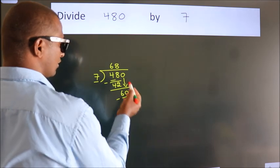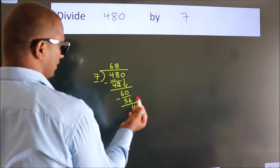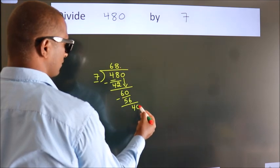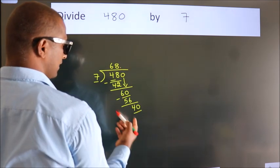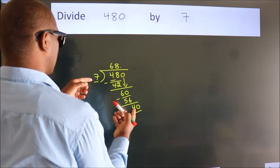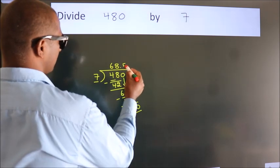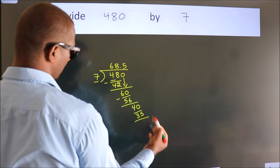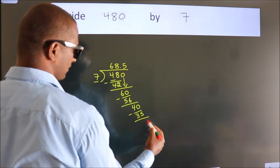After this, no more numbers to bring it down. So what we do is we put dot, take 0, so 40. A number close to 40 in 7 table is 7, 5, 35. Now we subtract. We get 5.